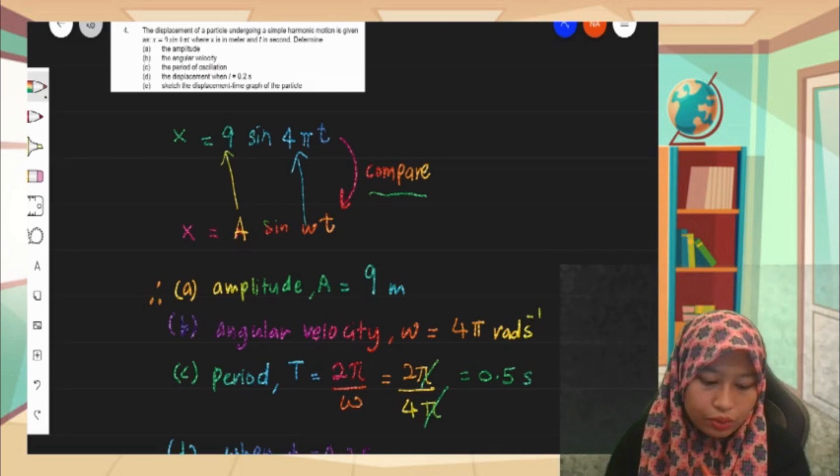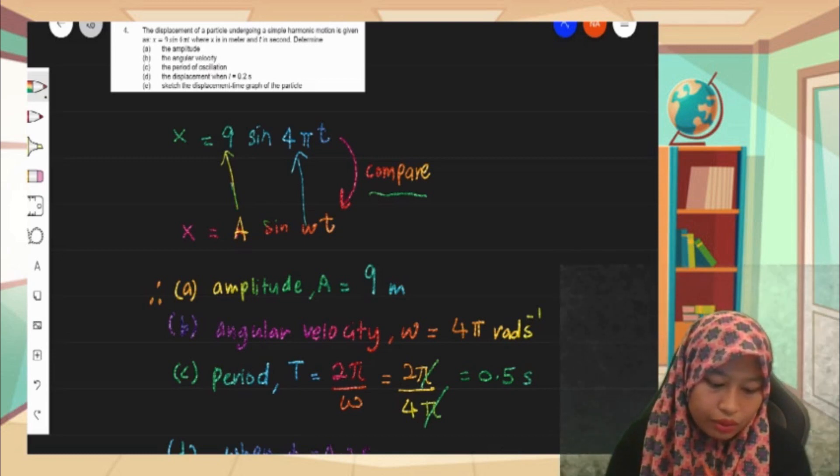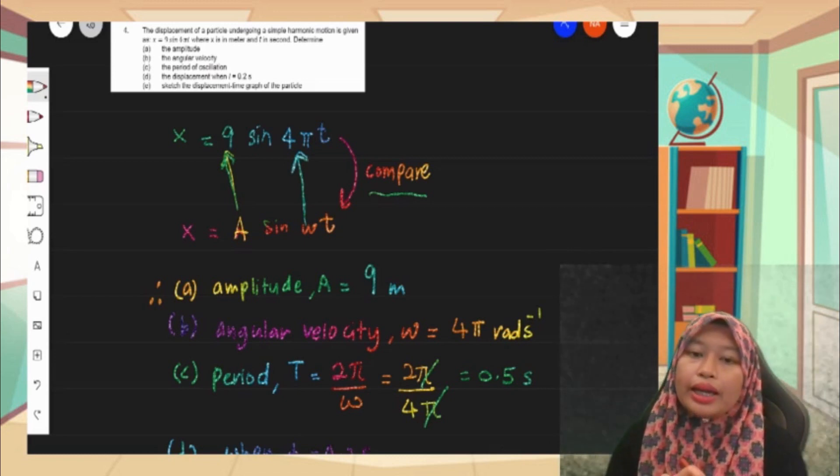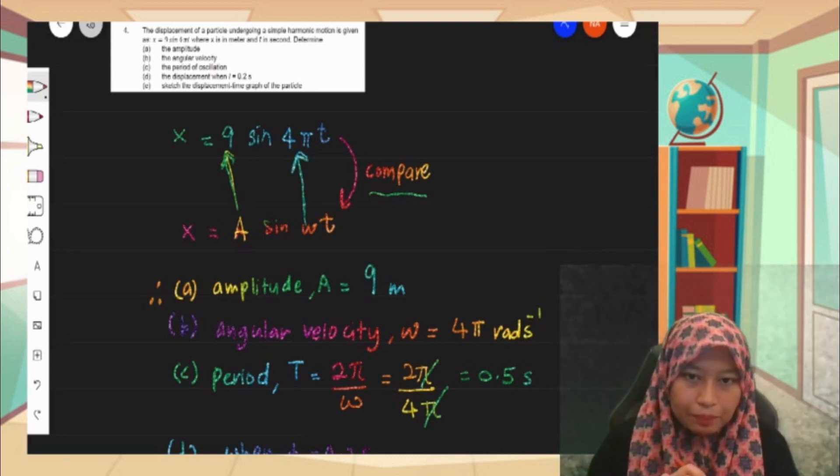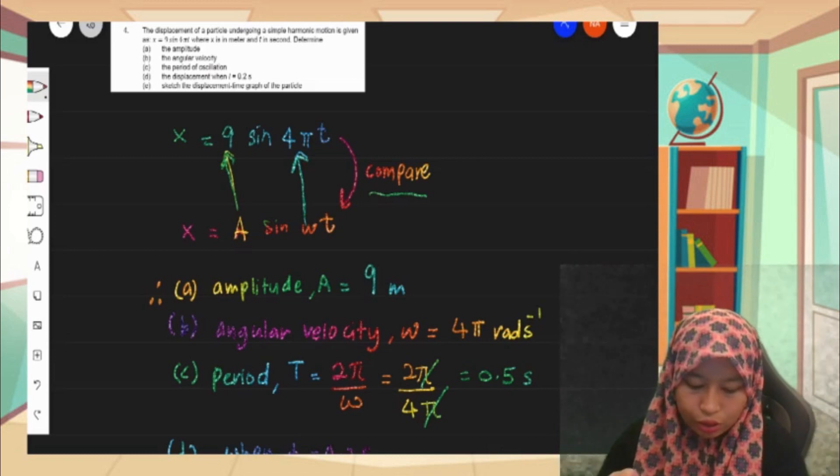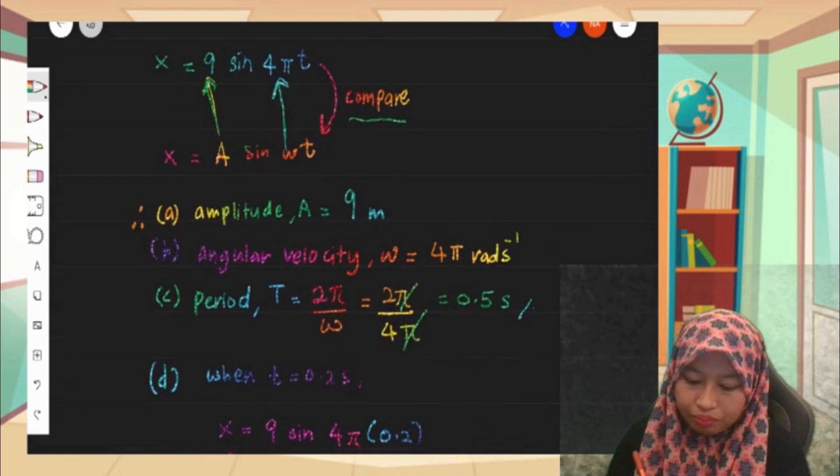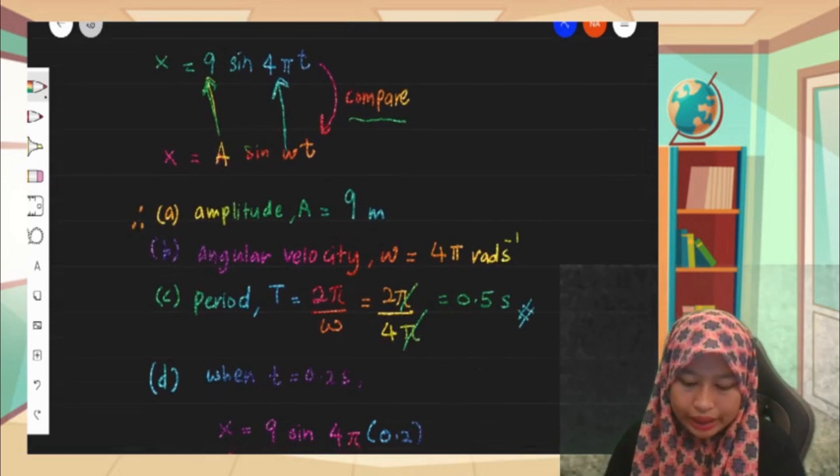which is 9, the one with arrow here, 9. And then I can get the value of omega immediately, which is 4π, unit is radian per second. The period is 2π over omega, so we've got period is 0.5 second here.